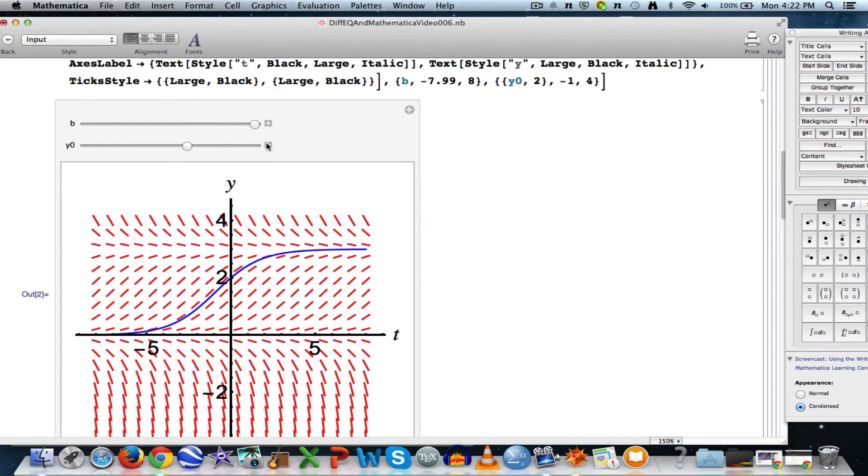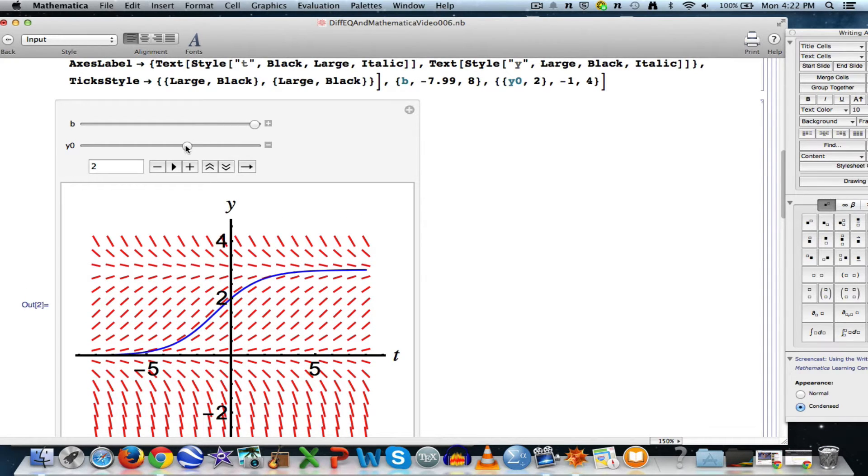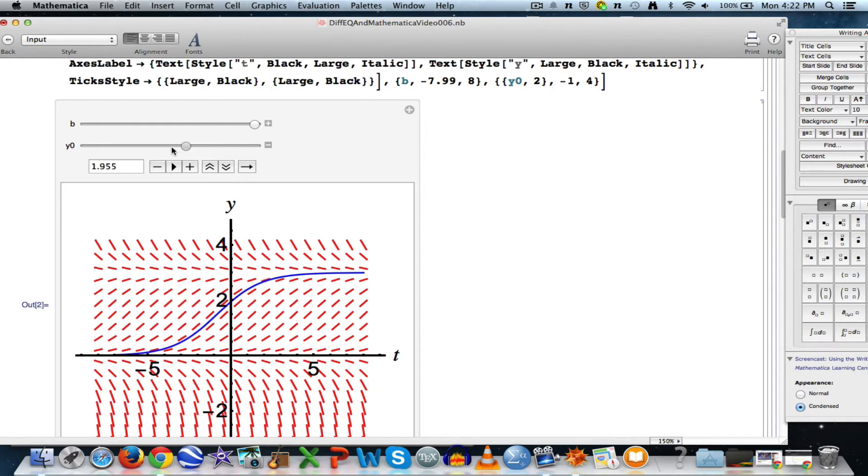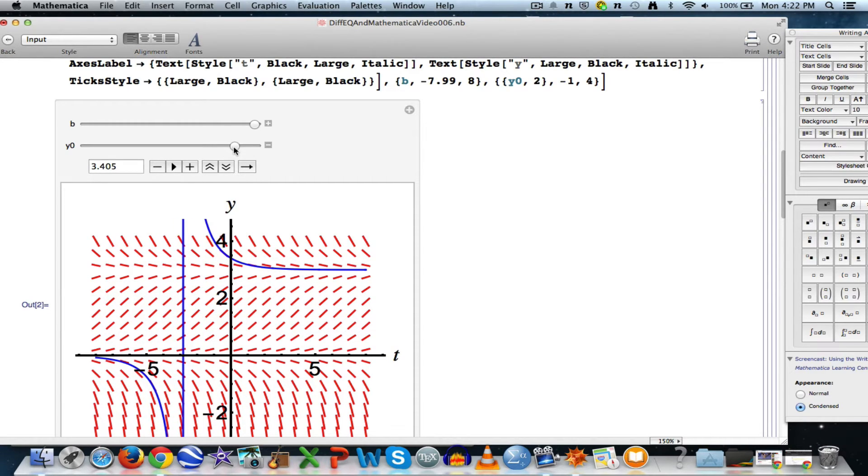On this bigger horizontal window here, now if I change the initial condition, the y-intercept, it is a little bit more clear that I get horizontal translations of the original graph. As long as I don't pass through an equilibrium solution, there is an equilibrium at y equals 3. Once I pass that, then I get a graph that's not a horizontal translation of the original solution.